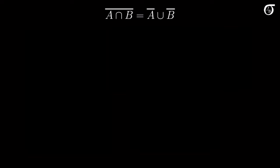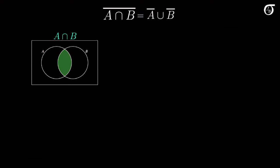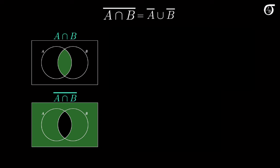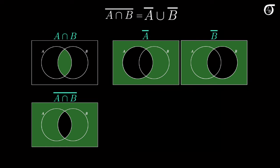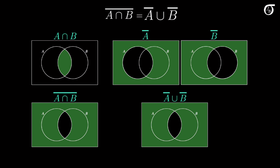Here's De Morgan's second law. Let's again start with the left-hand side. The intersection of A and B is the region that is in both A and B, represented by this green region. The complement of the intersection is everything outside of that intersection. Now for the right-hand side: A complement is everything outside of A, and B complement is everything outside of B. The union of these two events is the region that is in either A complement or B complement, or both — the region that is green in either one of these two plots. So the union of A complement and B complement is the entire region outside of the intersection of A and B. The only region not in either A complement or B complement is the intersection of A and B. These two regions are the same, and that's what De Morgan's second law tells us.